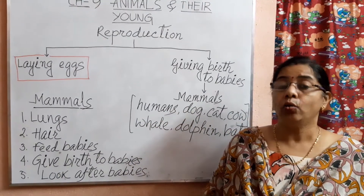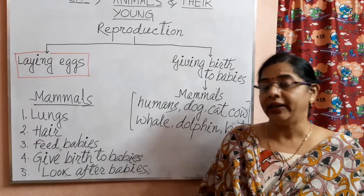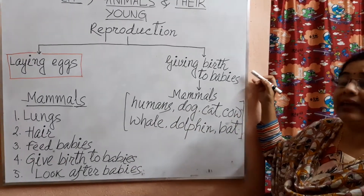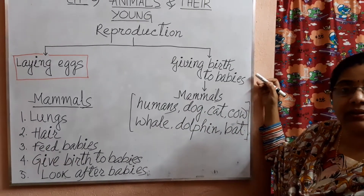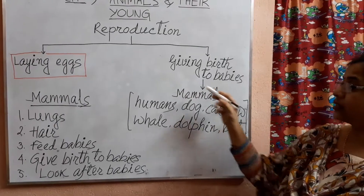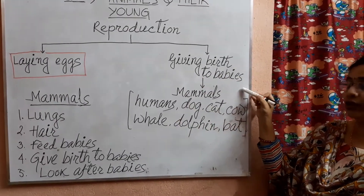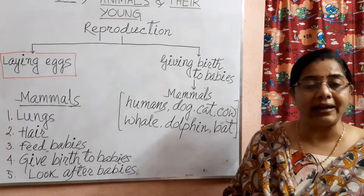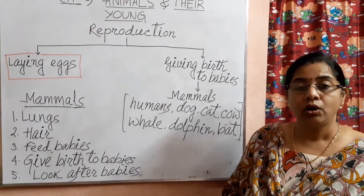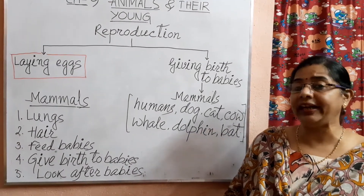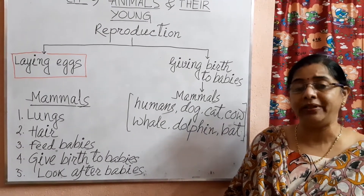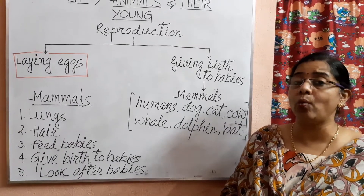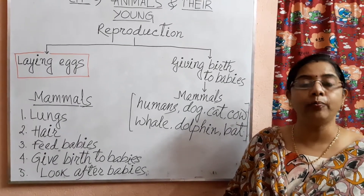Today we are going to study about the second way of reproduction among animals, that is by giving birth to babies. There are some animals who directly give birth to babies, who directly produce their young ones for reproduction.